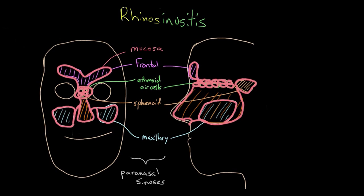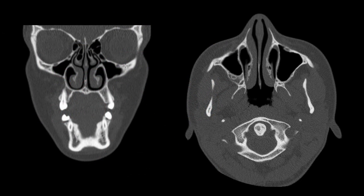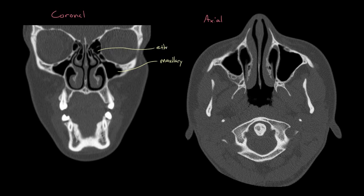I'd like to show a real example of this anatomy using a CAT scan. I'm going to label some structures on two images of an actual patient's CAT scan. The first image is a coronal image, meaning we're looking at the patient's face directly on. The second is an axial image — a slice through the patient's sinuses. Just like in our cartoon, we have the maxillary sinuses under your eyes, the ethmoid air cells, the nasal cavity, and on the axial image you can see the maxillary sinuses and the nasal cavity extending forward toward the patient's nose.